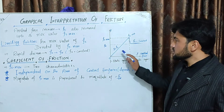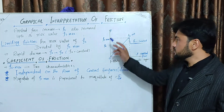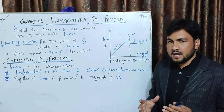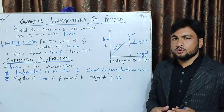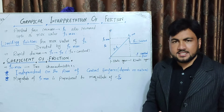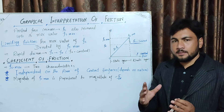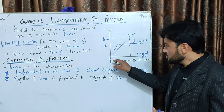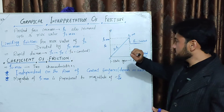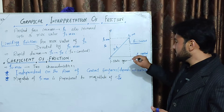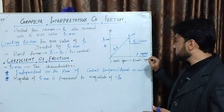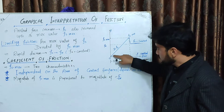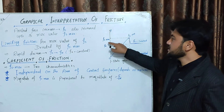In the graph, we use the x-axis for applied force and the y-axis for friction force. We see that as applied force increases, the friction force also increases. The graph shows applied force on x-axis and friction force including static friction on the y-axis.